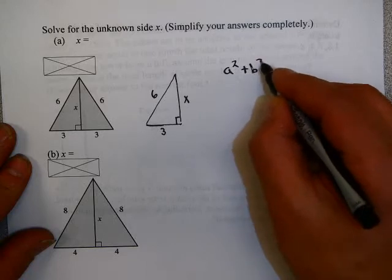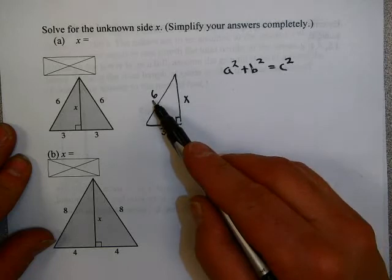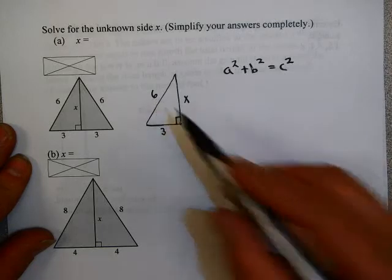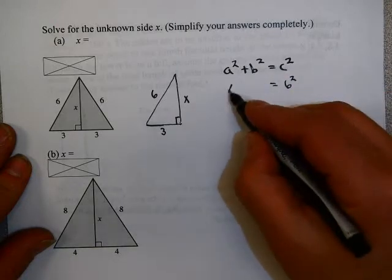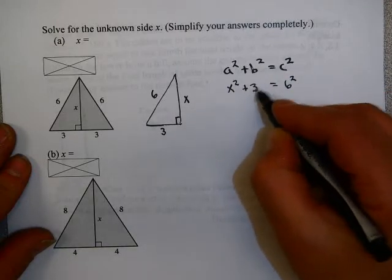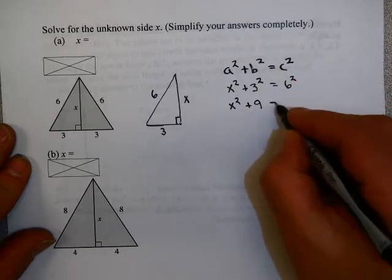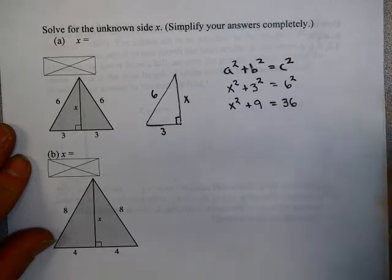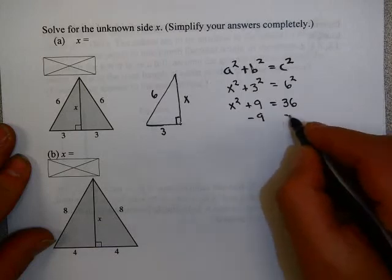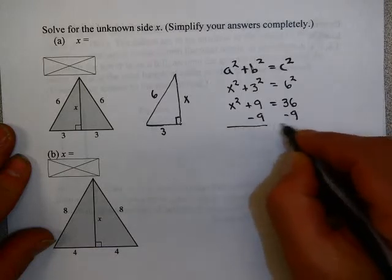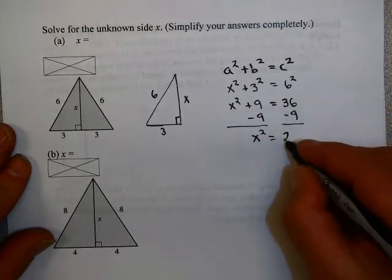A squared plus B squared equals C squared. In this case, C has to be the hypotenuse. It's opposite the right angle, so that's 6 squared. A squared is x squared. B squared is 3 squared. So that's x squared plus 9 equals 36. Now, solve this like the problems we solved in video 2. We're going to subtract 9.